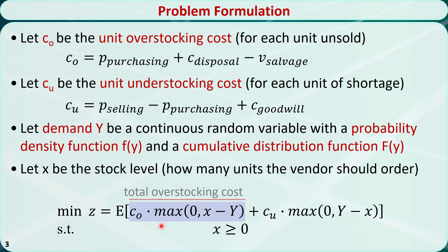The total overstocking cost is equal to the unit overstocking cost times the quantity. If the vendor overstocks the newspaper, the stock X is greater than the demand Y, so this part will be a positive value. Otherwise, there will be no overstocking cost.